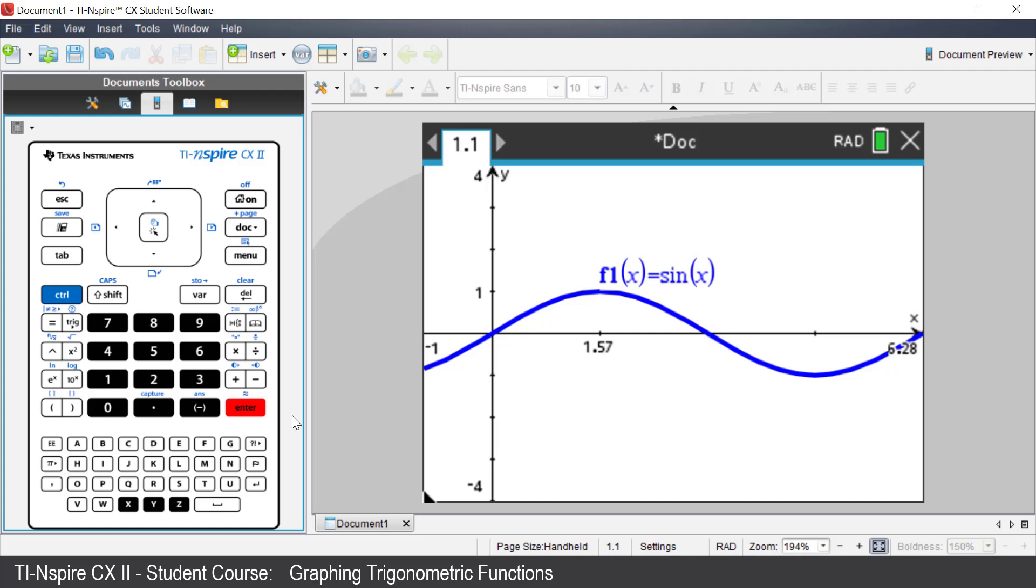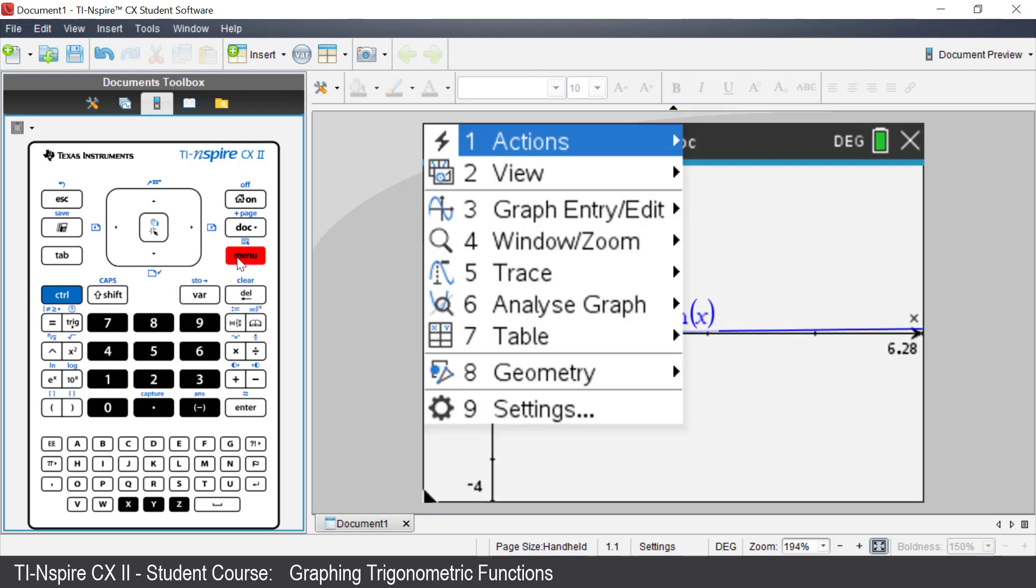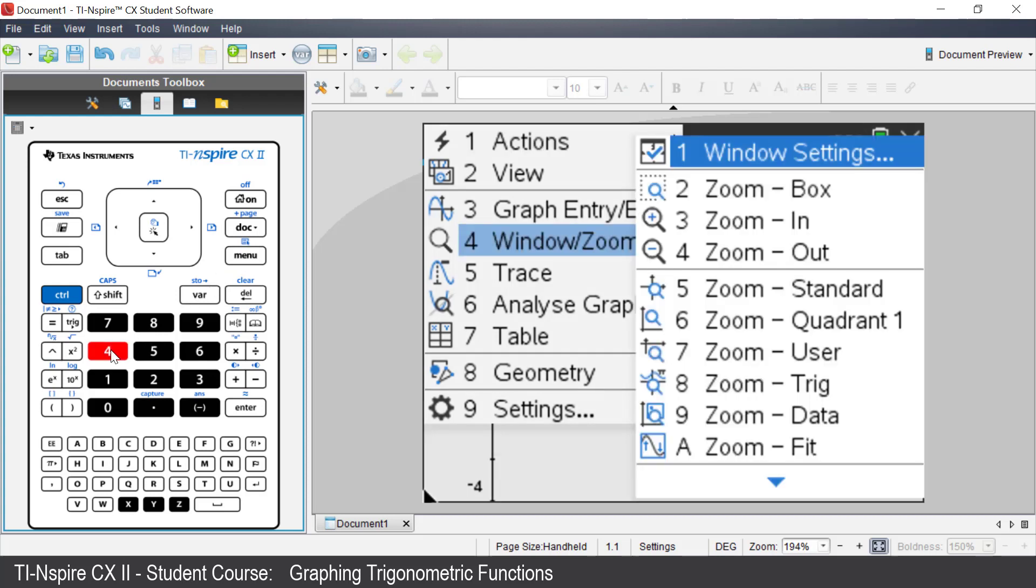If you wish to change the graph in degrees, change the mode in the top right hand corner. The window needs to be changed. Press Menu. Select Window Zoom. Select Zoom Trig.